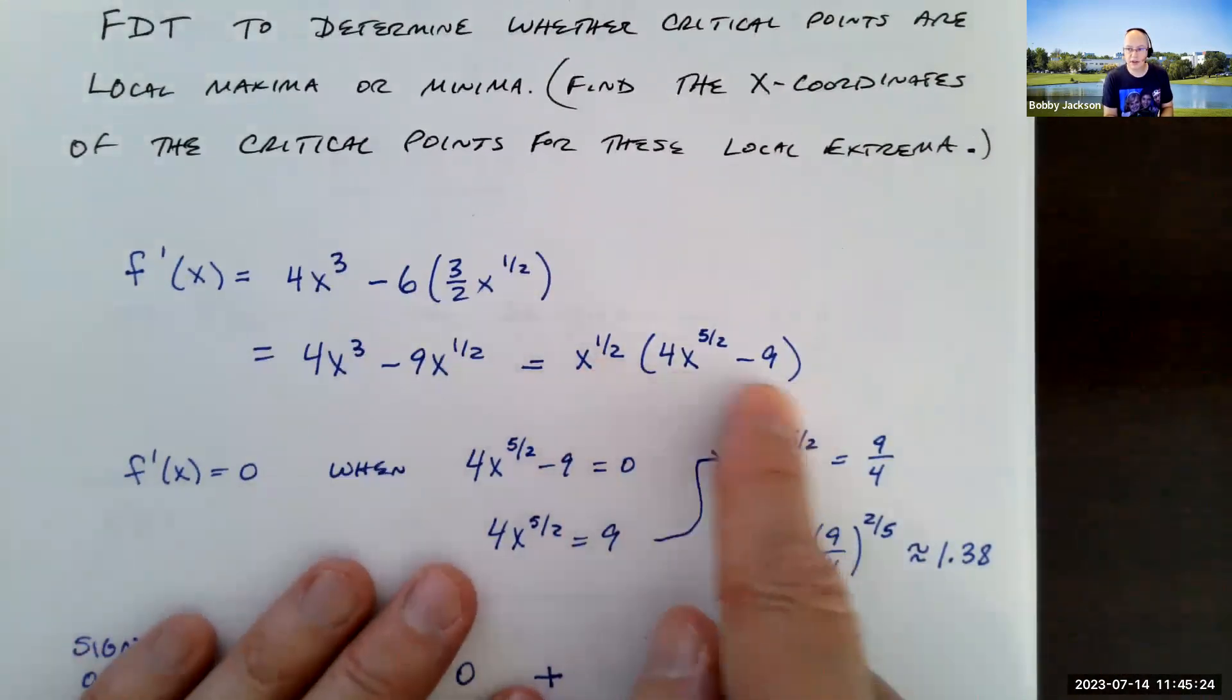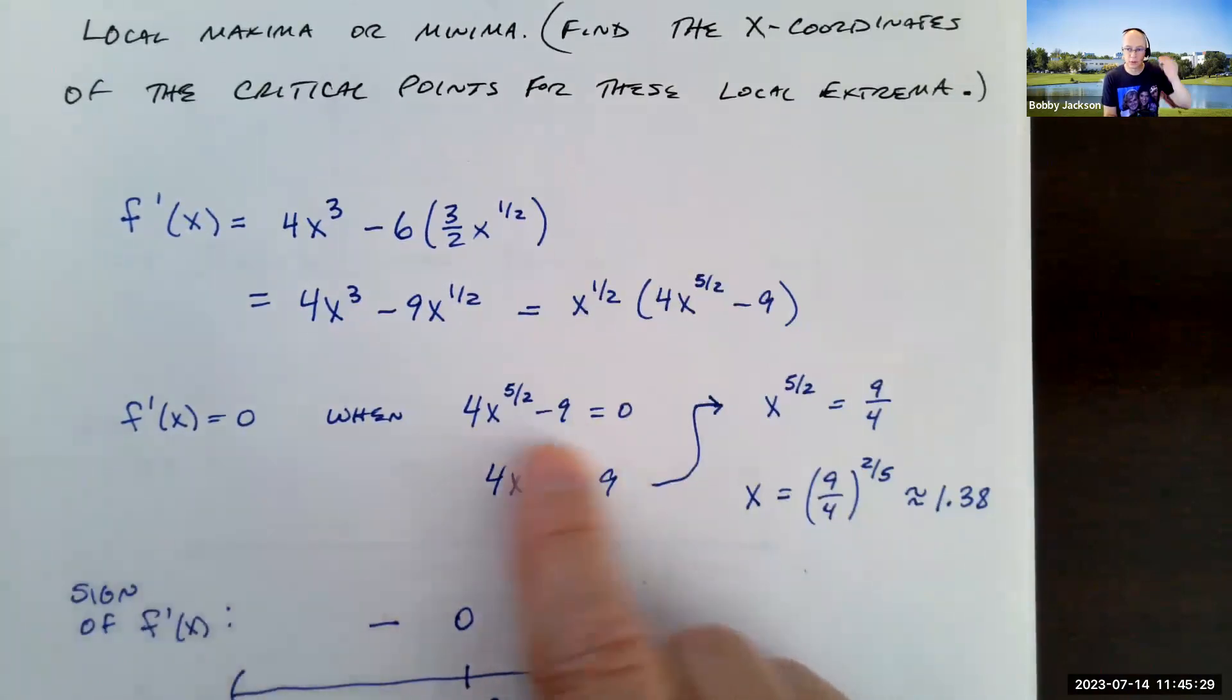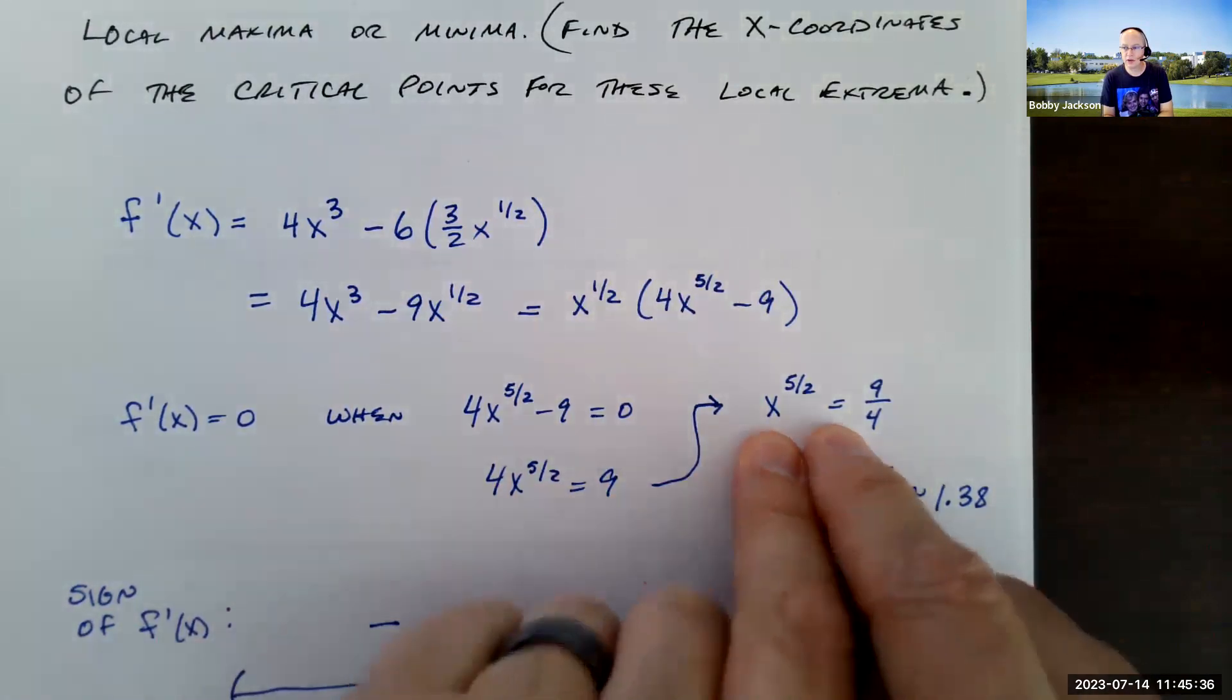But this part, if this is zero, so 4x to the five halves minus nine is zero, then the derivative will be zero. Well, what value of x makes that zero? We'll add nine to both sides, divide by four, and then solve for x.